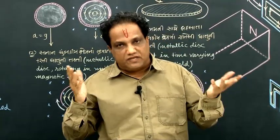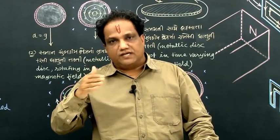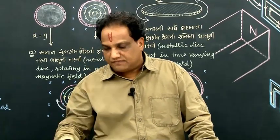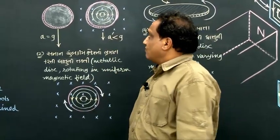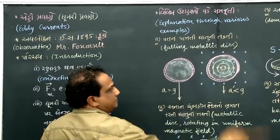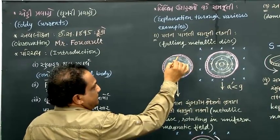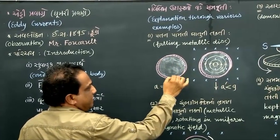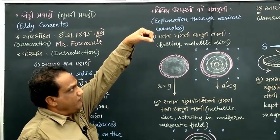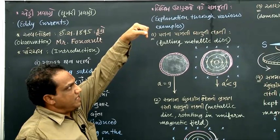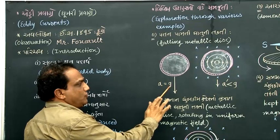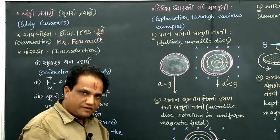How are eddy currents produced? Let us consider various examples to understand their formation. First, consider a falling metallic disc. We allow this metallic disc to fall freely. When allowed to fall freely and naturally, its acceleration is equal to gravitational acceleration.